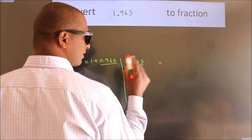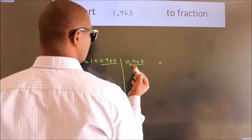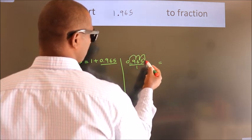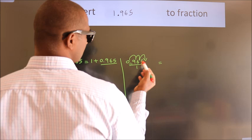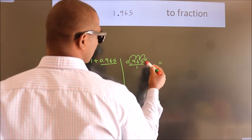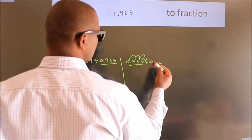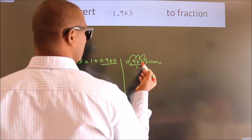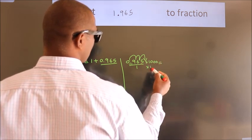for that we have to move this decimal after 1, 2, 3 numbers. To move this decimal after 3 numbers, for that we have to multiply it with 1000. Whatever number you are multiplying in the numerator, in the denominator also do the same.